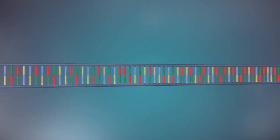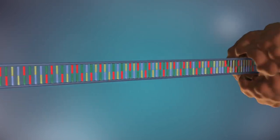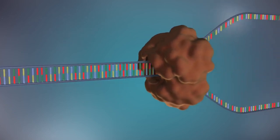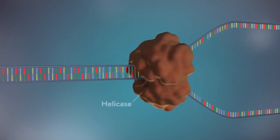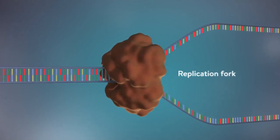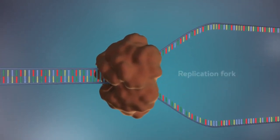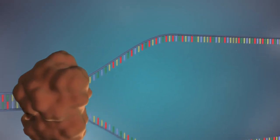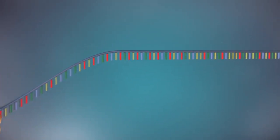The first step in DNA replication is to separate the two strands. This unzipping is done by an enzyme called helicase and results in the formation of a replication fork. The separated strands each provide a template for creating a new strand of DNA.